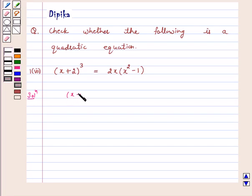Our given equation is (x + 2)³ = 2x(x² - 1). This implies, open this bracket as a whole cube.